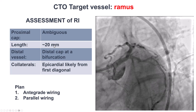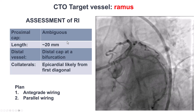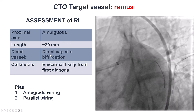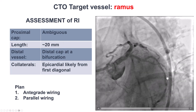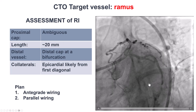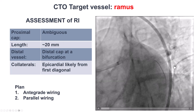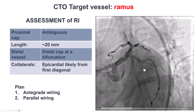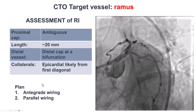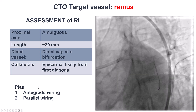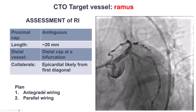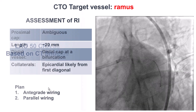The occlusion, which we thought was 20 millimeters, is actually less than 10. There is a bifurcation on the distal cap, and there are epicardial collaterals that don't seem to be interventional. So based on this, our plan was to do antegrade wiring.